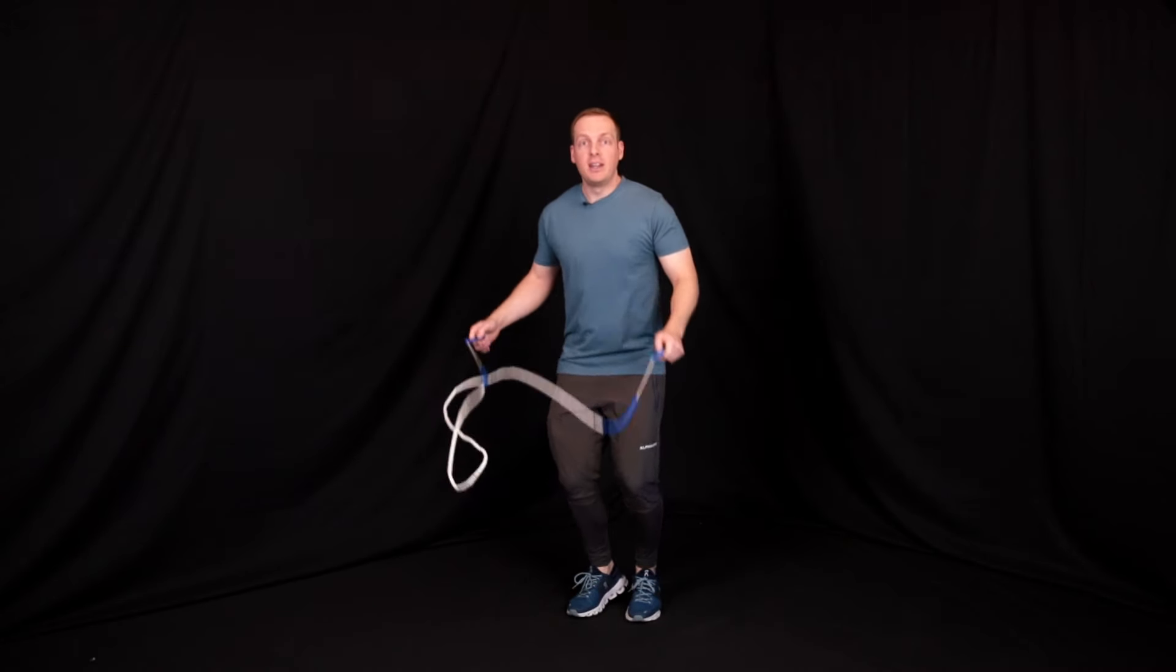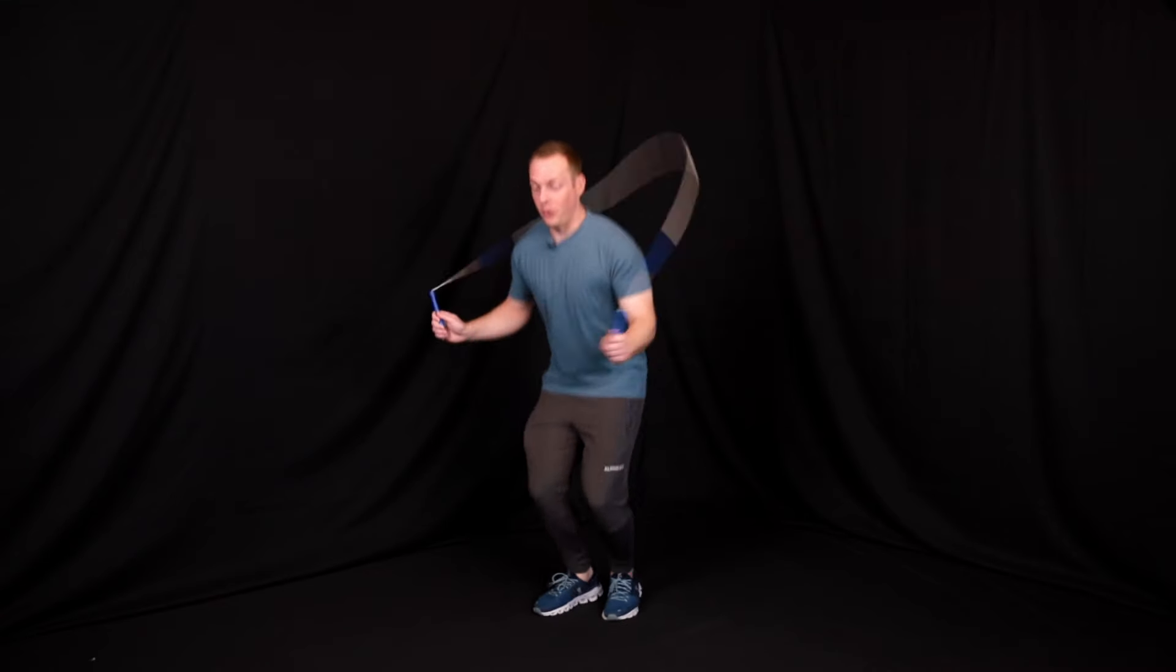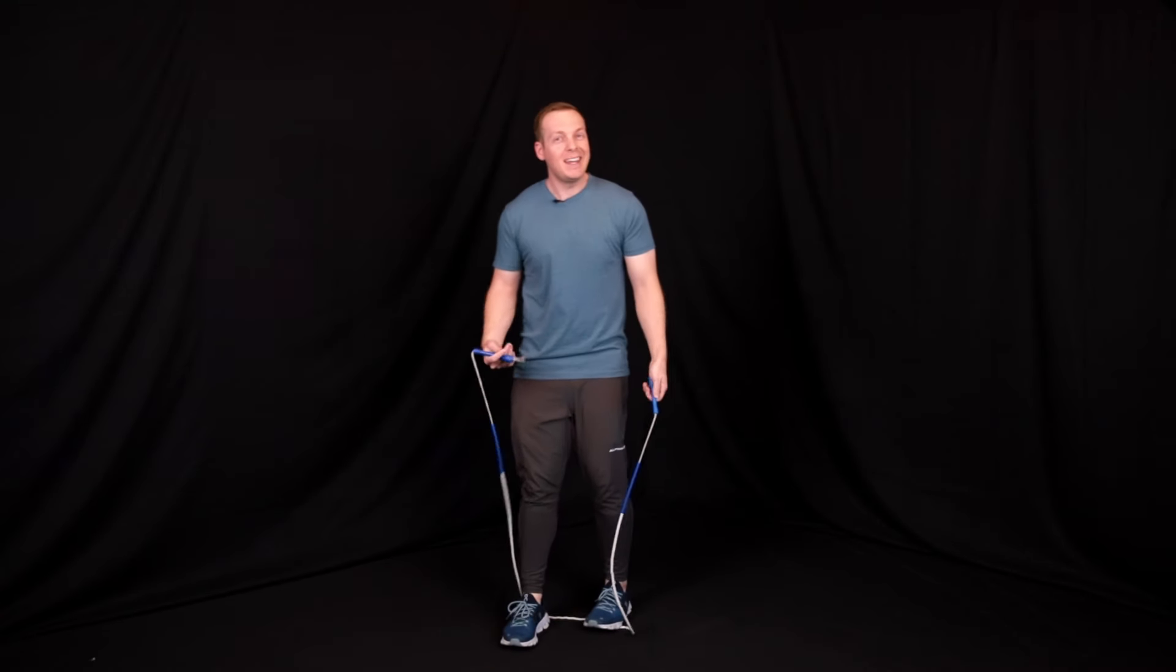So if you want smooth double-unders and to do them consistently, but right now you're kind of stuck just doing one rotation, you can't quite get the rope around, got some tips that are gonna help you out. This is actually very common.